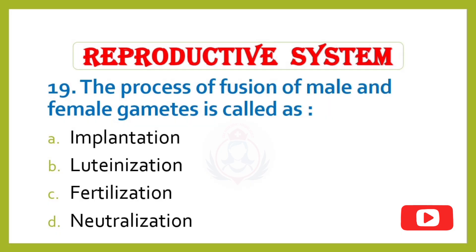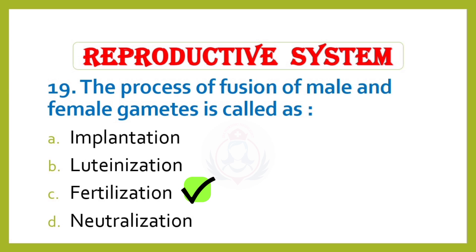Question 19. The process of fusion of male and female gametes is called: Option A – Implantation, Option B – Luteinization, Option C – Fertilization, Option D – Neutralization. Correct answer is Option C: Fertilization.